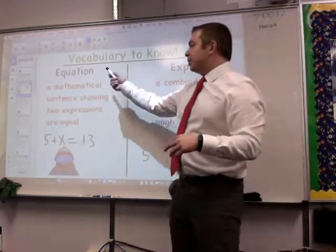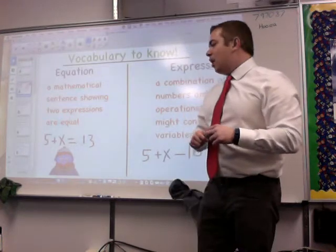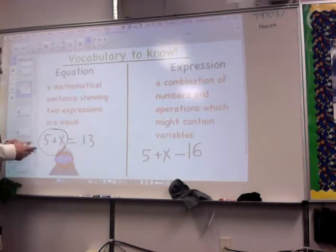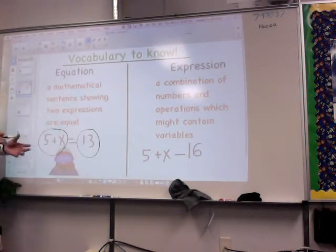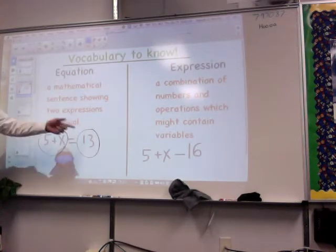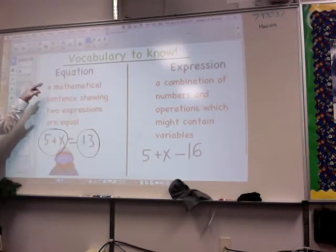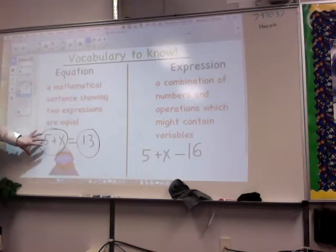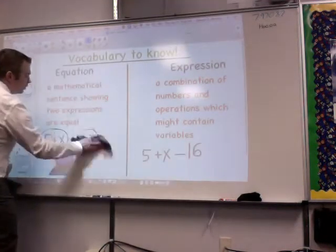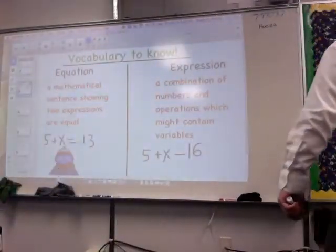That brings us to an equation, which is a mathematical sentence showing two expressions are equal. Right here I have 5 plus x, that's my first expression, and then I also have 13. So these are equal. That x is going to be 8 because 5 plus 8 equals 13. But an equation, see the word equation says equal sort of is in there. Equation means equal, so both expressions are equal. It's not an equation until you can balance both sides.